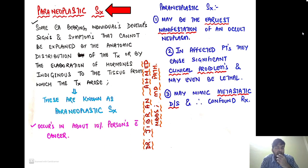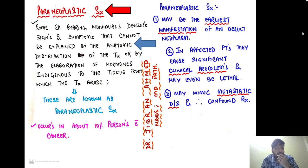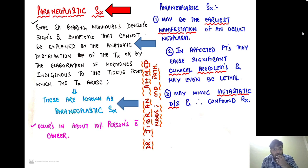What is paraneoplastic syndrome? Certain individuals who are suffering from cancer develop signs and symptoms that cannot be explained by the anatomical distribution of that tumor, or by the elaboration of the hormones which are indigenous to the tissue from which the tumor is arising. These are known as paraneoplastic syndromes — such a constellation of signs and symptoms which cannot be explained by the anatomical location of the tumor or by the indigenous hormones of that tissue.